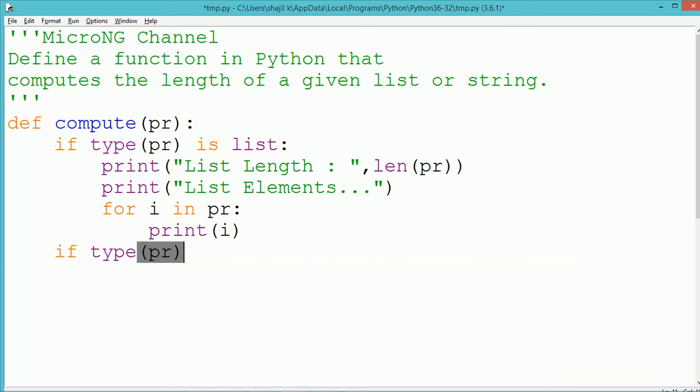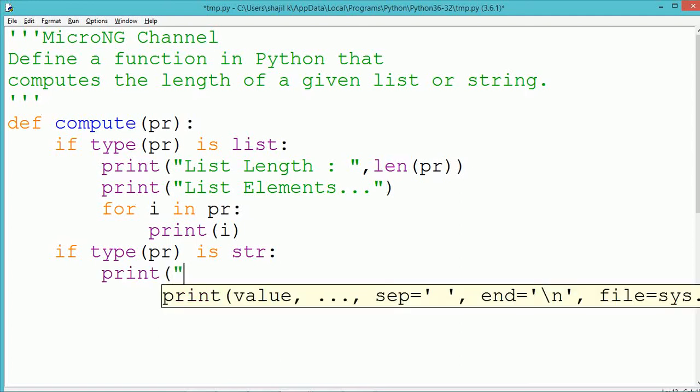By using a for loop with the index variable i, i takes each of the items from the list pr and it gets printed by using the print method.